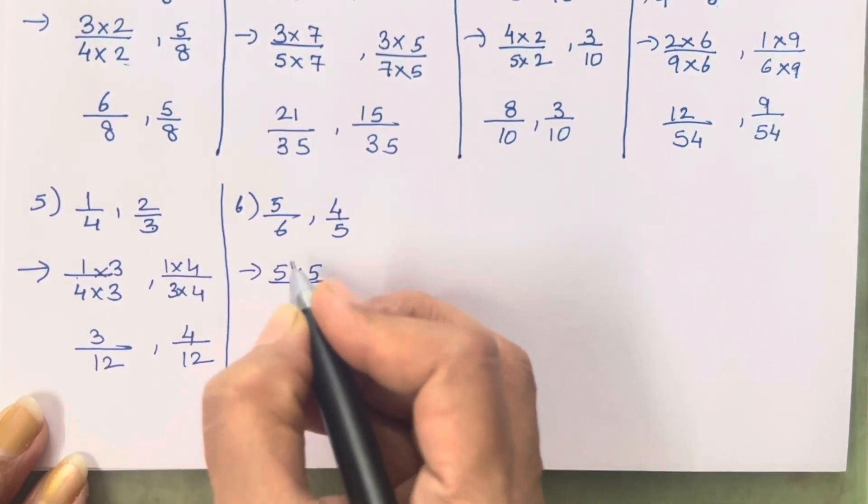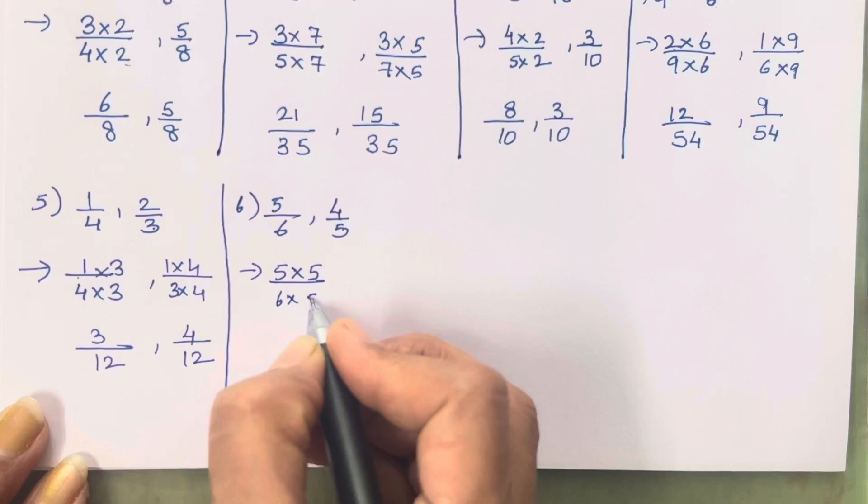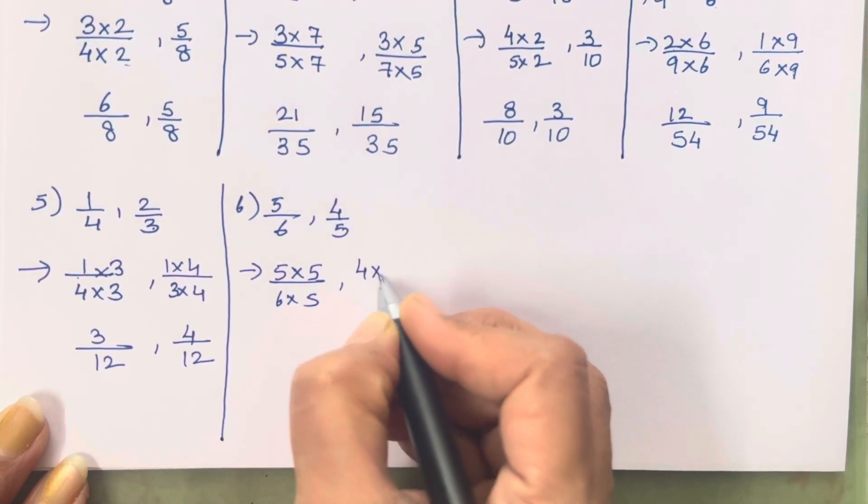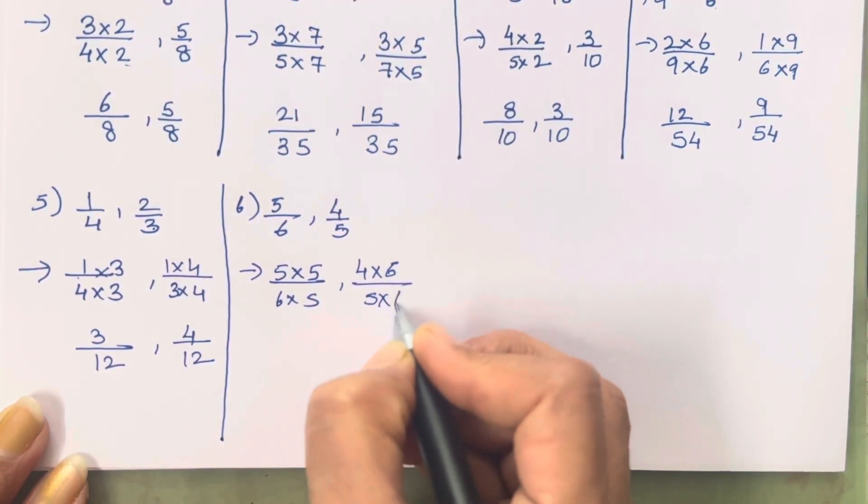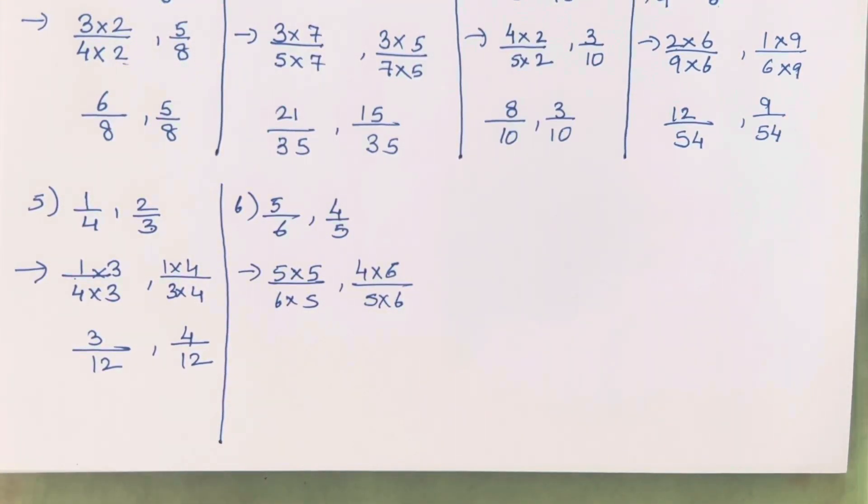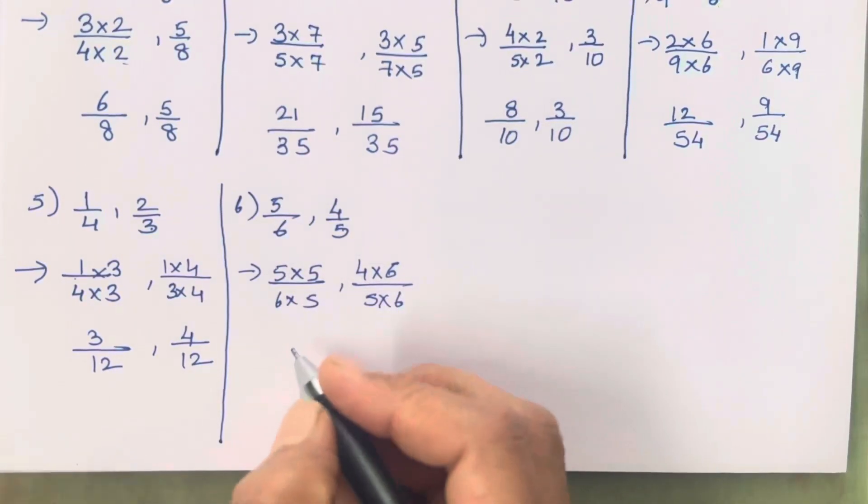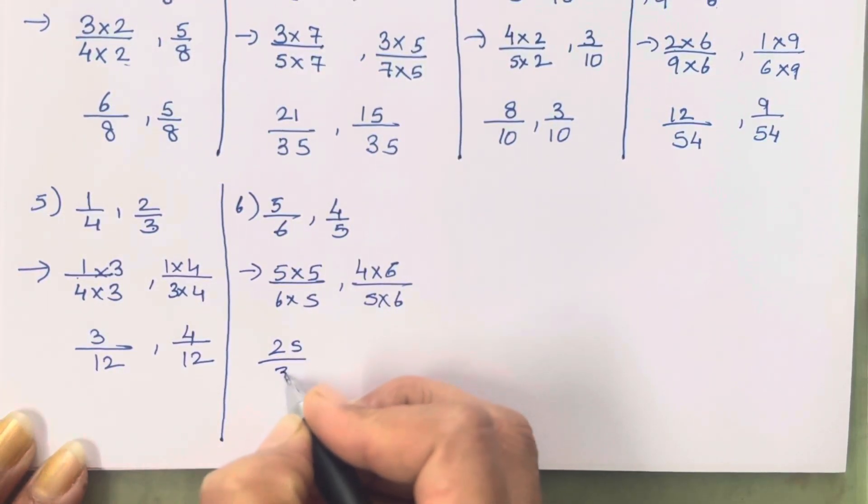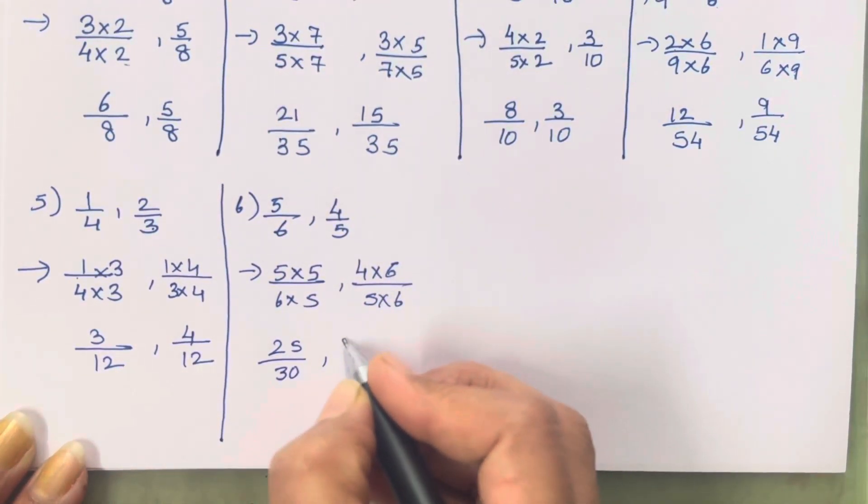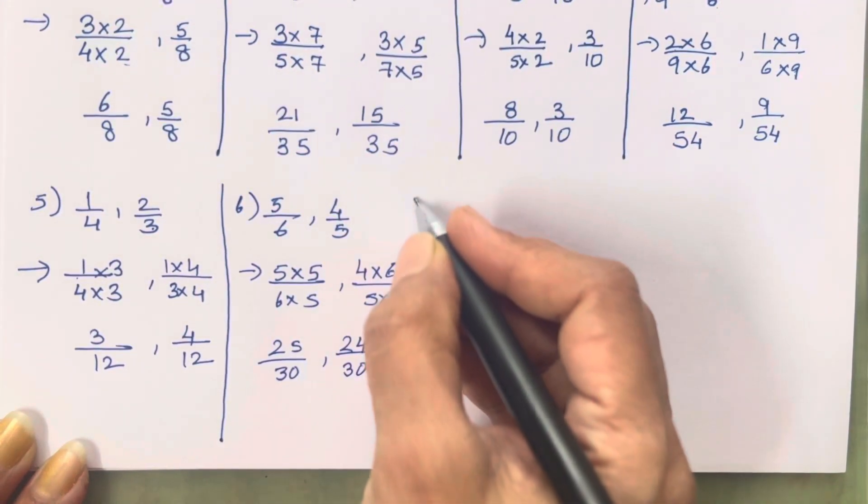I hope now by now everyone has understood what is the concept and what we have to actually do in order to get the denominator same. So 5 5s are 25, 5 6s are 30. 4 6s are 24 and 5 6s are 30.